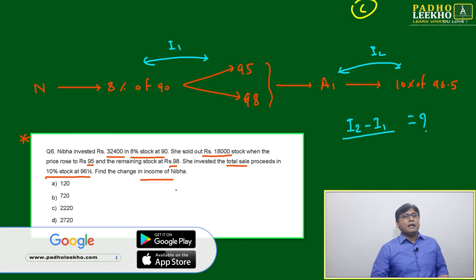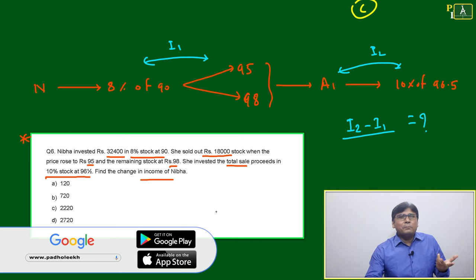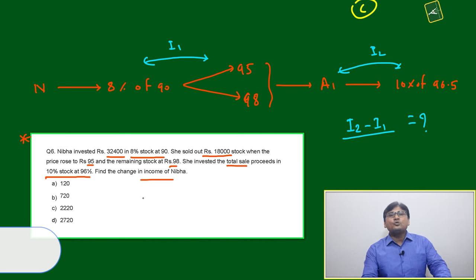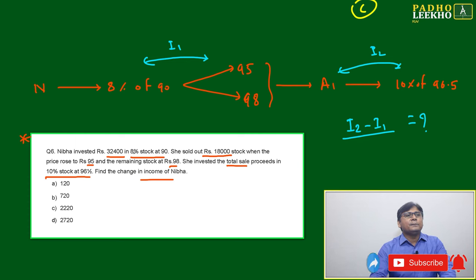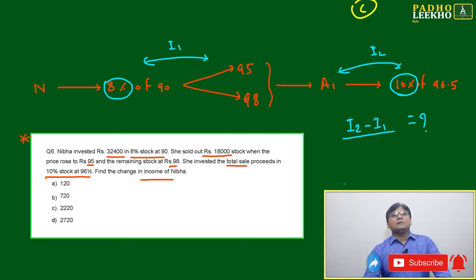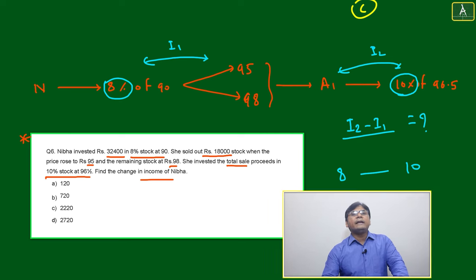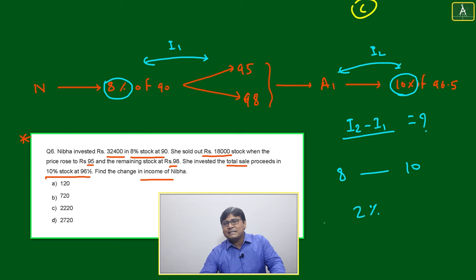If you look at the question, it is lengthy and all calculations have to be done. But we can use some common sense, a shortcut, a trick — a cheat code to solve this type of question. The initial share was 8% and finally she is purchasing 10%, so the change is 8% to 10% — that's a 2% change on average.